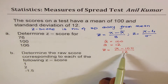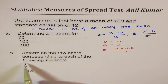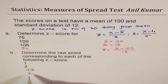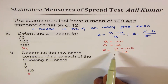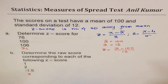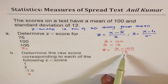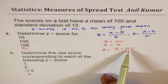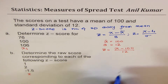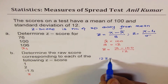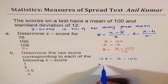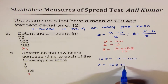Now in Part B, we have to do reverse calculation. We are given the Z-score, and we need to find the original raw data. So we will rearrange this formula. Since we are given standard deviation of 12 and mean of 100, we cross multiply. We can rewrite this as 12 times Z equals X minus 100, or X equals 12Z plus 100.